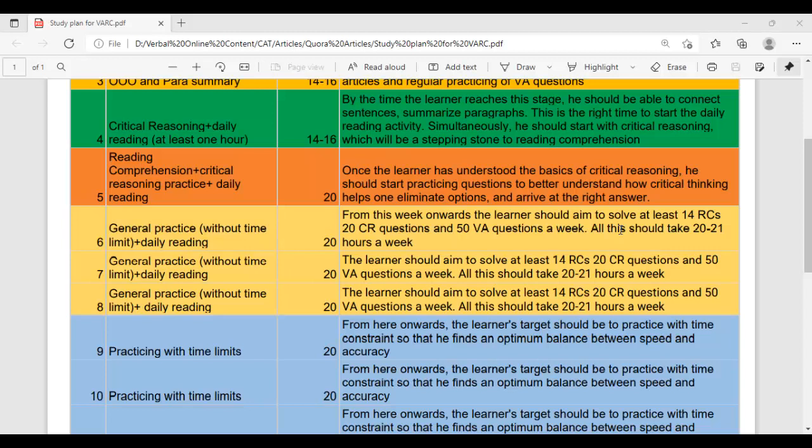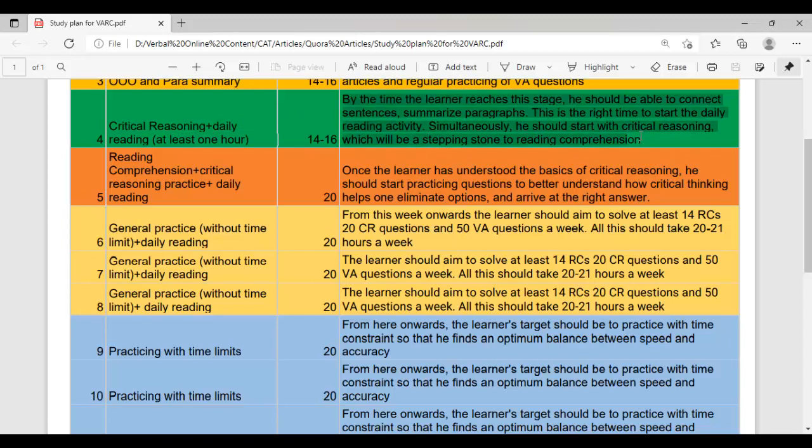When you enter into the critical reasoning, I have said here that the daily reading should go on for at least one hour. That is what we had discussed in the earlier video. Now in critical reasoning, we focus on critical thinking. Until now you have focused on how to arrange sentences, how to connect sentences, so there is not much of critical thinking. But once you attend to critical reasoning, critical thinking becomes very important. And this critical thinking is of great help in reading comprehension. You can say that critical reasoning is the stepping stone to reading comprehension.